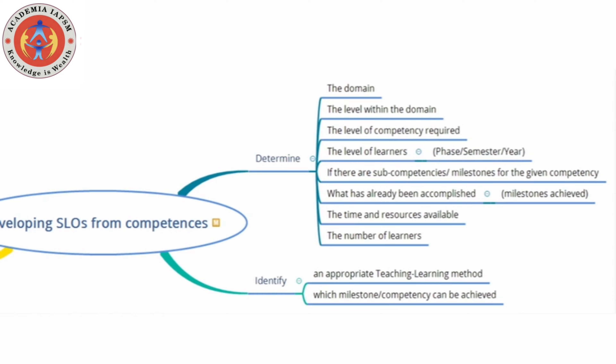Once you know that, you have to look at the level of the learners. This could be in terms of the phase — phase 1, phase 2 — or by semester: semester 1, 2, 3, and so on, or first year, second year, etc. You also need to determine if there are sub-competencies or milestones for that given competency.